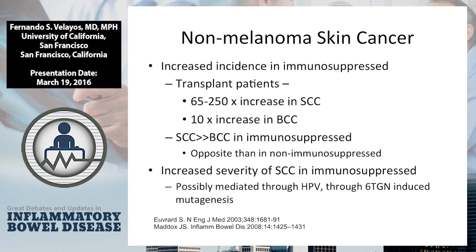Non-melanoma skin cancers have increased incidence in the immunosuppressed. In transplant patients, there's about a 65 to 250 times increase in squamous cell and about a 10 times increase in basal cell. In the immunosuppressed population, it's typically reversed — squamous cell is more common than basal cell. Antimetabolites such as 6-MP or azathioprine have a very unique feature: the metabolite 6-TGN is found in the skin and uniquely absorbs UV radiation, causing local destruction. This is thought to be one reason why there's an increase in squamous cell cancers in patients on azathioprine and 6-MP, with the other mechanism mediated through HPV.